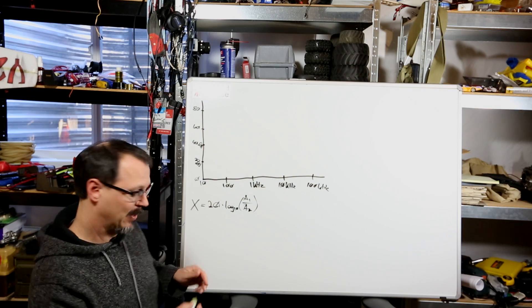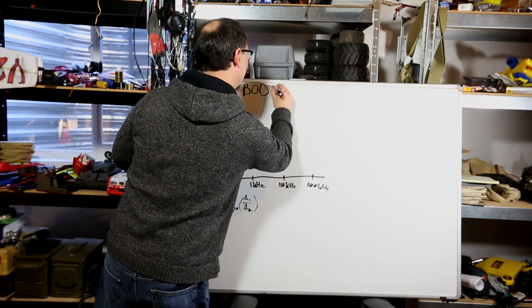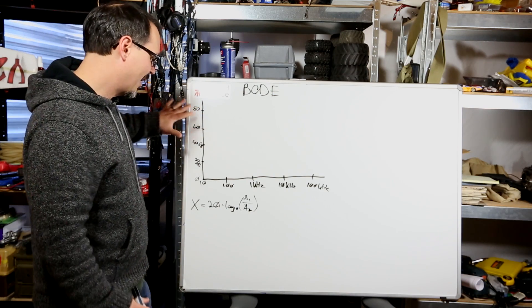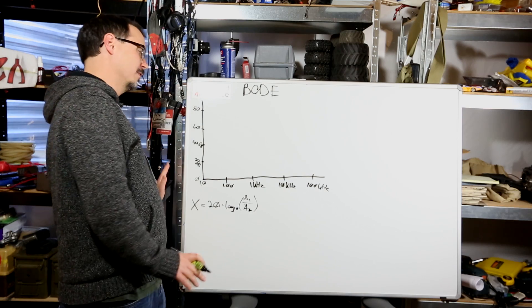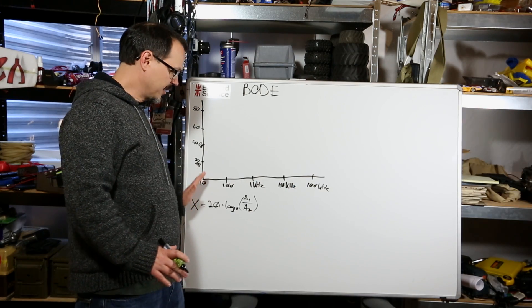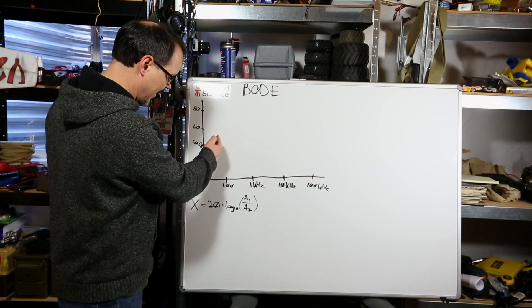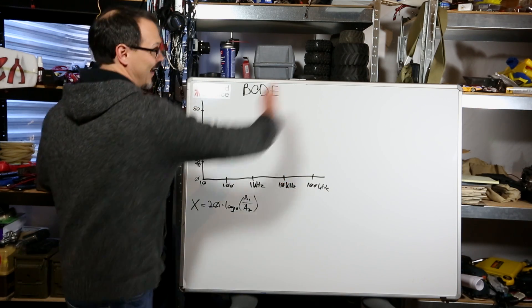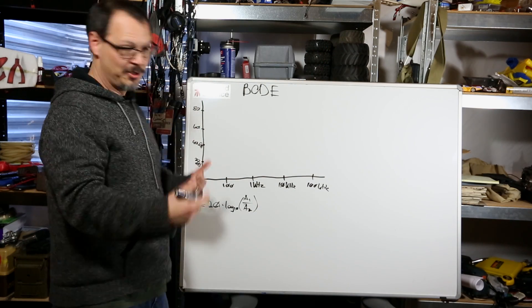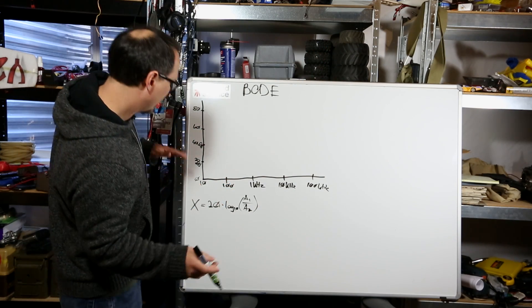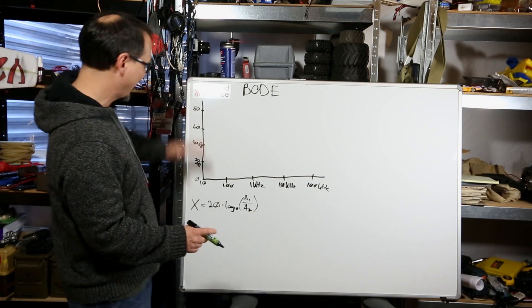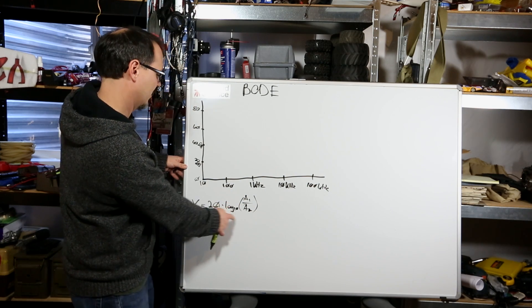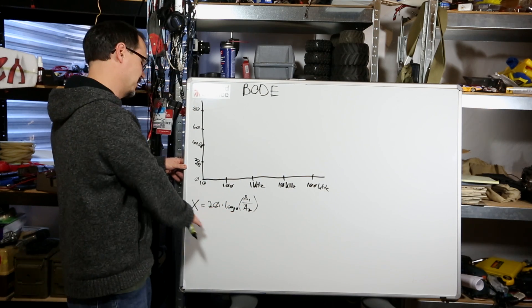So this is a Bode plot. B-O-D-E. Bode plot. What this is, is a graph of decibels over frequency. The frequency is graduated by orders of magnitude. In this case, I'm going from 10 hertz to 100 hertz to 1 kilohertz to 10 kilohertz to 100 kilohertz, and it goes on. Decibels are, by their nature, orders of magnitude. In this case, anything to calculate the decibel value on this, you take value 1 over value 2, log 10 of that times 20, and you get a number.